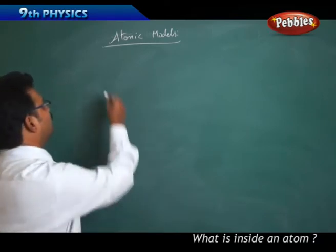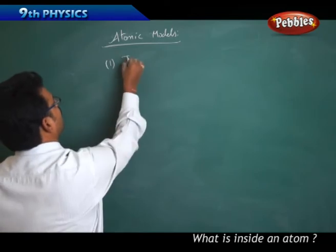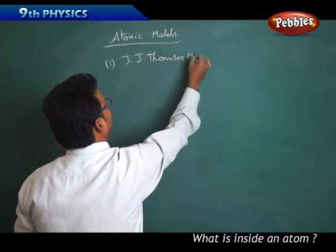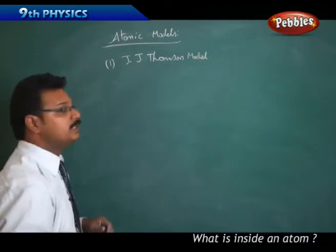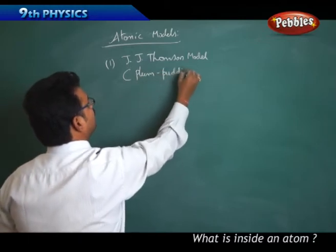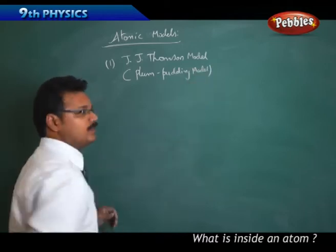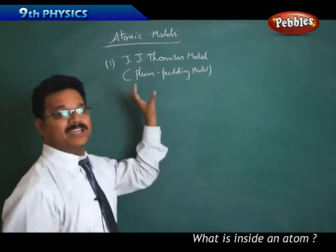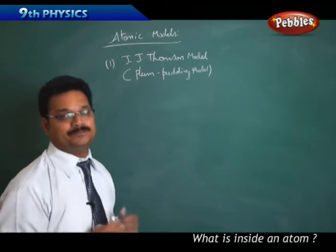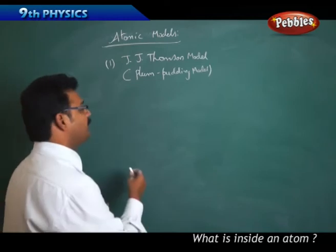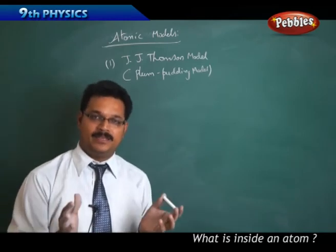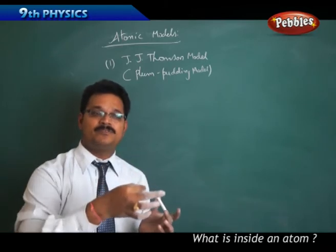The first one is called J.J. Thomson model, also called the plum pudding model. It was the first atomic model to understand the shape and nature of the atom. According to this, if you see a plum cake, the cake has some different types of puddings.